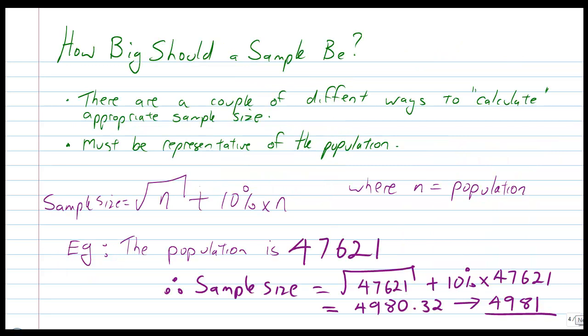So, how big should you make a sample? Because, you know, we're talking about making sure that your sample is big enough to be able to see what you want, but how big should it be? There's a couple of ways of doing this. There's a couple of mathematical formulas you can use, and one that we use, which is an approximate one, is getting your sample size being the square root of n plus 10% times by n, where n equals the population you're looking at.